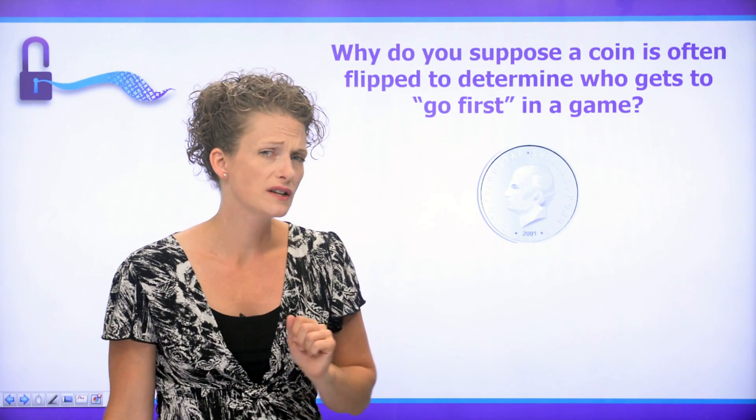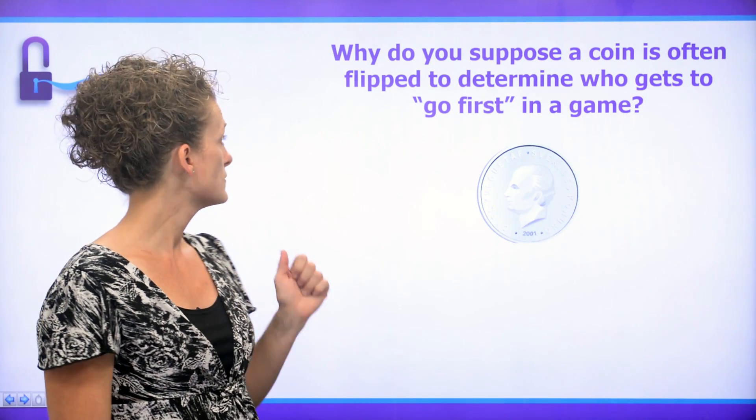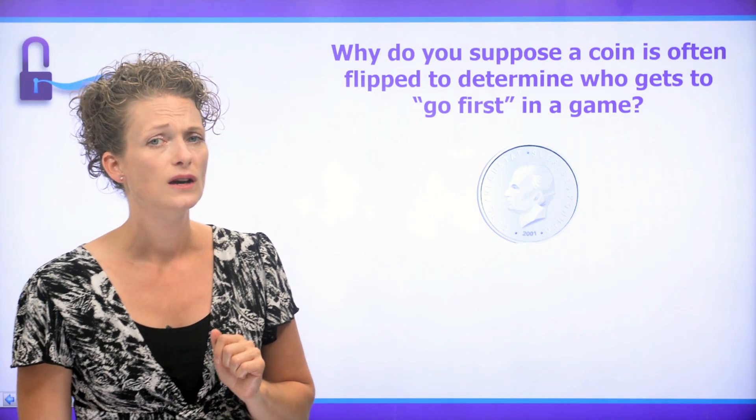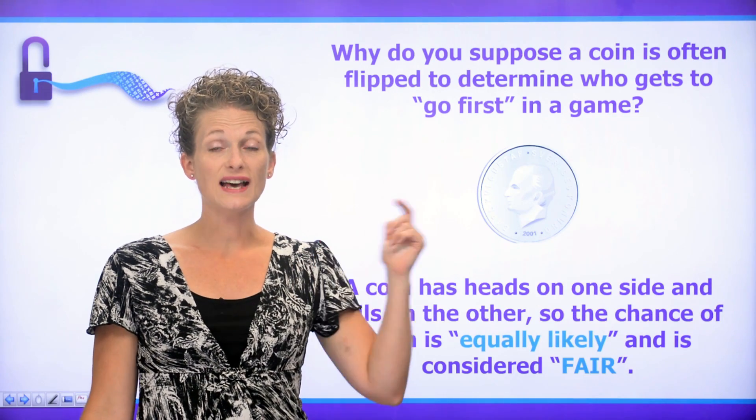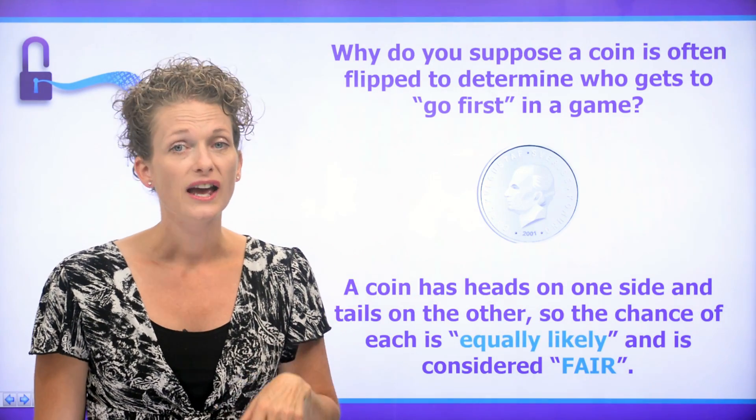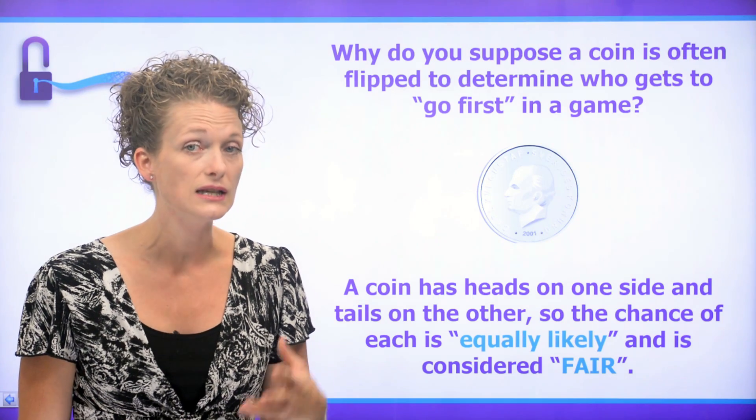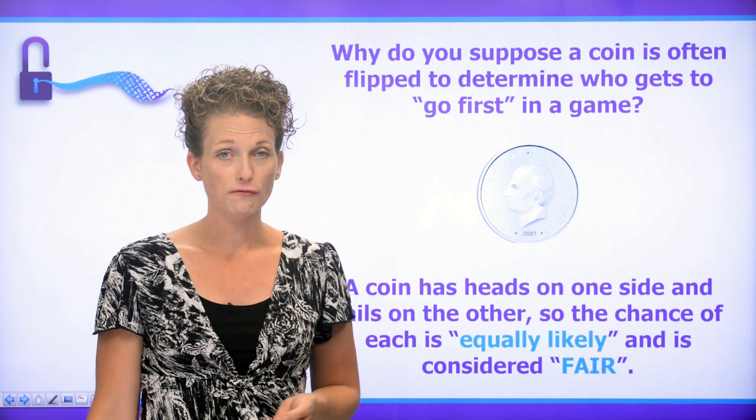Why do you suppose a coin is often used to determine who goes first in a game? Well, what do we know about a coin? We know that it has heads and it has tails, and so either possibility is equally likely and is considered fair.